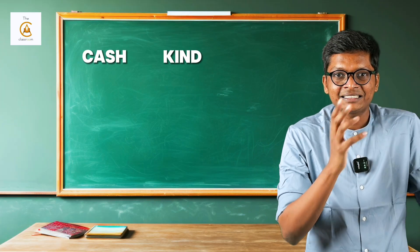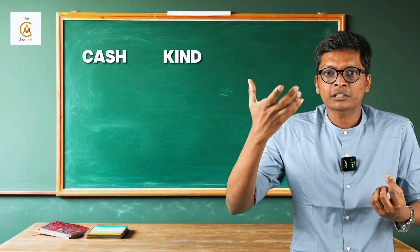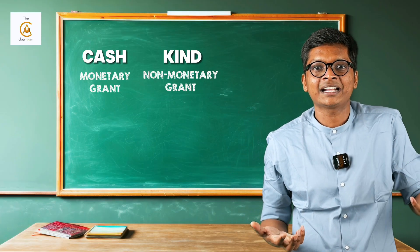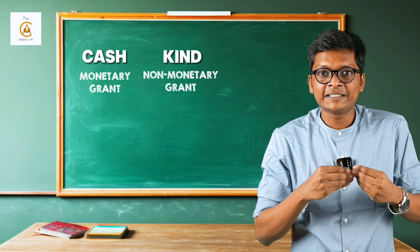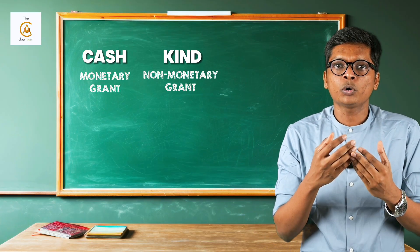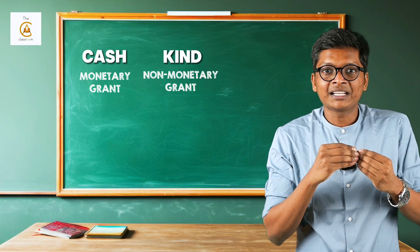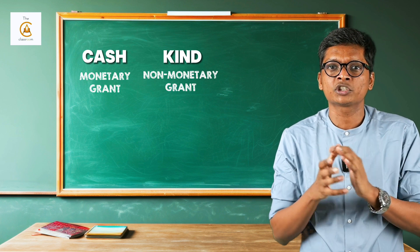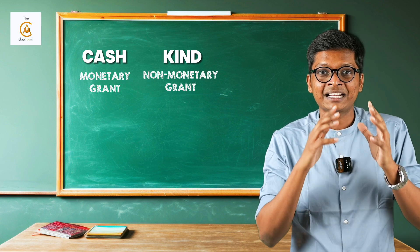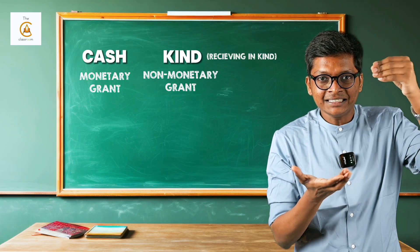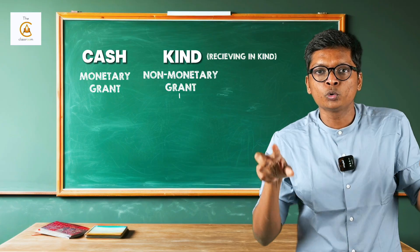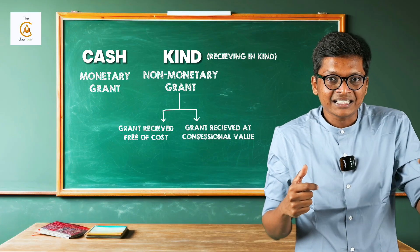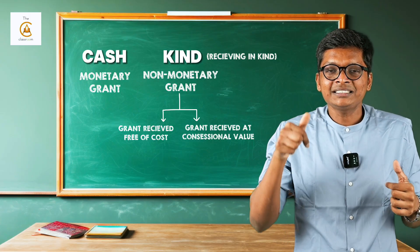Now let's go to the accounting of government grants - the second part. Cash grants are called monetary grants, and kind grants are called non-monetary grants. Non-monetary grant means receiving in kind. In non-monetary grants, we have two types: grants received free of cost, and grants received at concessional value.